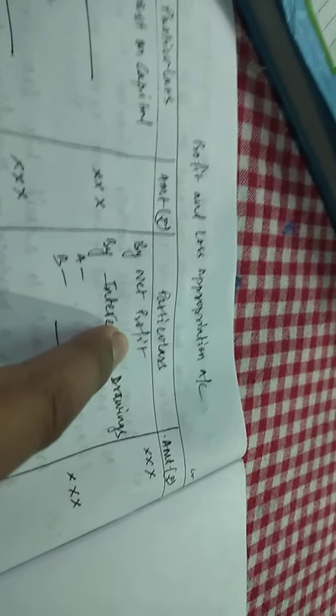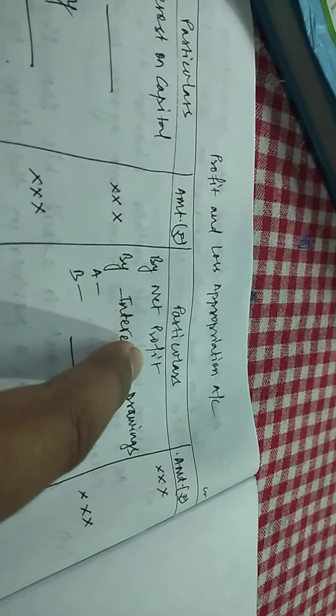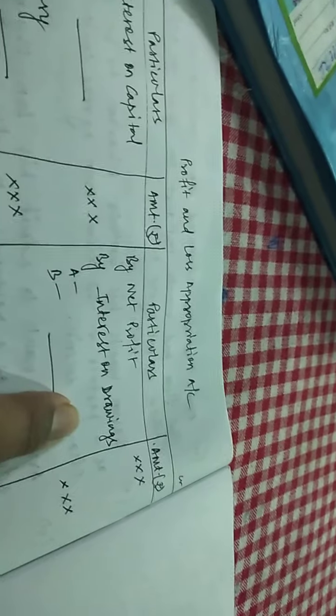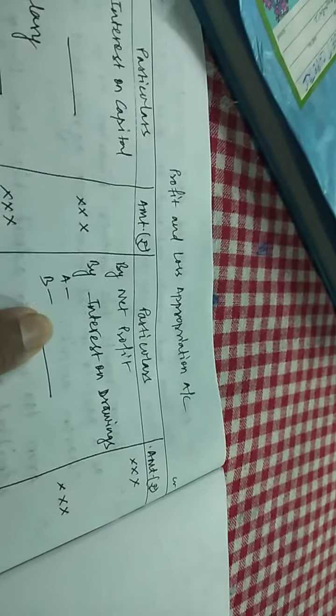Now let us check what items appear here. First of all, we need the net profit — that is what we obtain from the profit and loss account. That net profit will be transferred here. Thereafter, the interest on drawings: whatever drawings are made by the partners, interest would be charged on that, and that interest will appear here on the credit side.